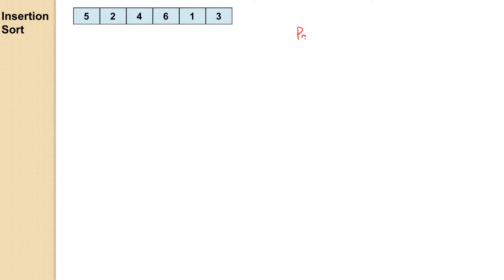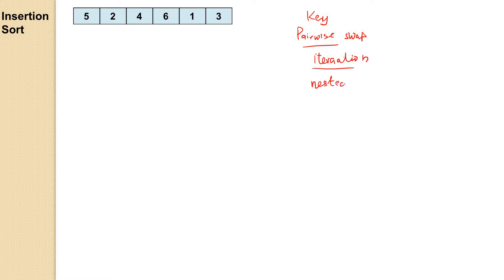There is a theme you need to know and that theme is called pairwise swap. That is the keyword of insertion sort, and also there is another word you need to know which is 'key,' and of course you know about iteration. The next theme you need to know is a nested loop. Let's put all this together to see how insertion sort works here.